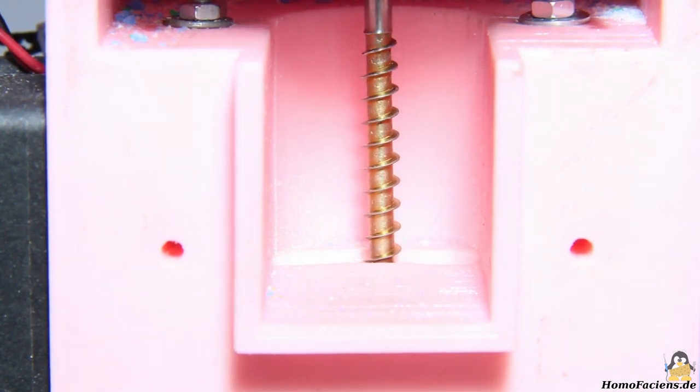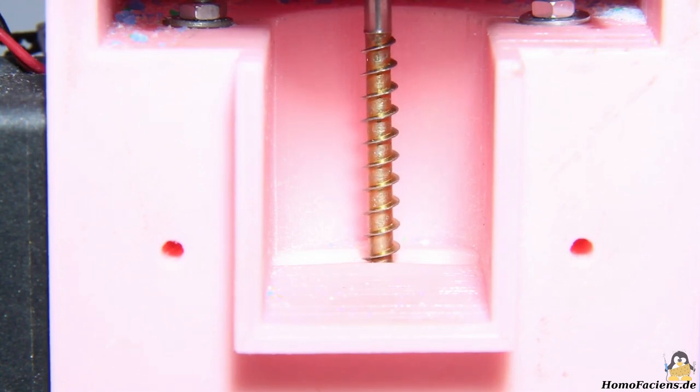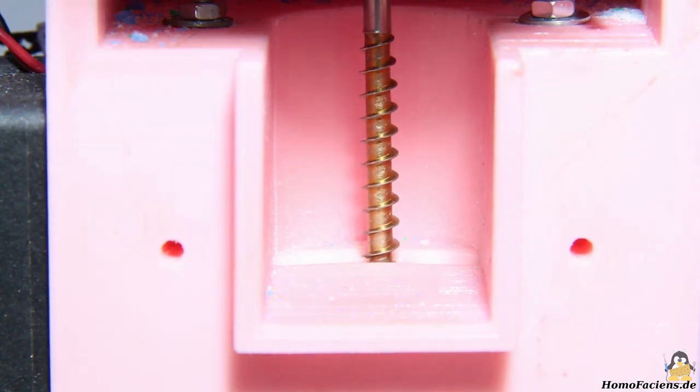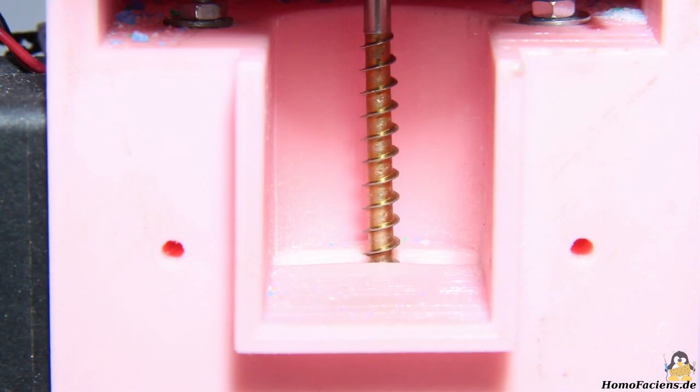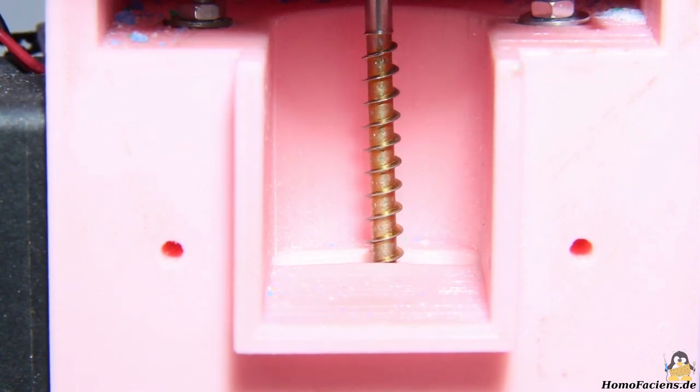Another advantage are the better dosing capabilities. If the screw must rotate a larger angle in order to push a certain amount of granules through the extruder, the reverse conclusion is, with the same angle of rotation, less plastic is coming out of the nozzle. When printing fine details, less is more.